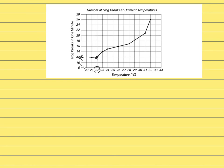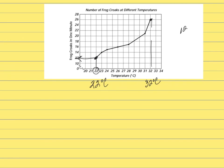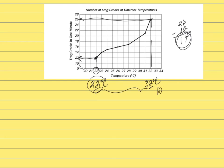What is the difference in croaks between 22 degrees Celsius and 32 degrees Celsius? You find the number at 22°C, which is 12, and the number at 32°C, which is 26, and then you subtract. The result: you can expect your frog to croak 14 times more per minute if you increase the temperature by 10 degrees. That is the information you are looking for when you are reading a line graph.